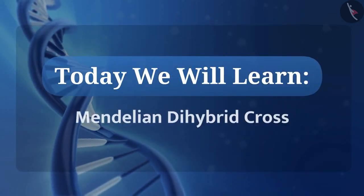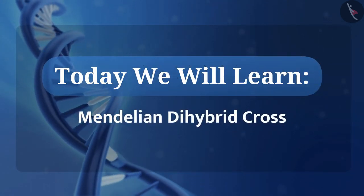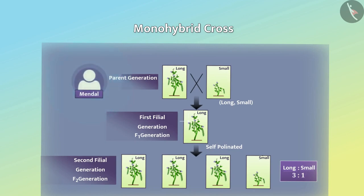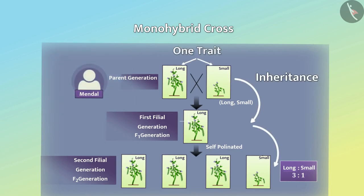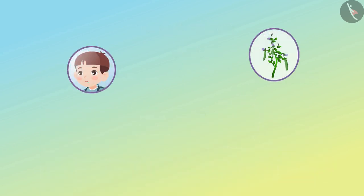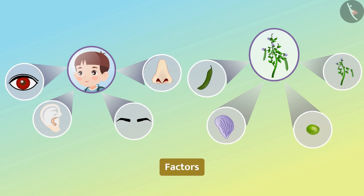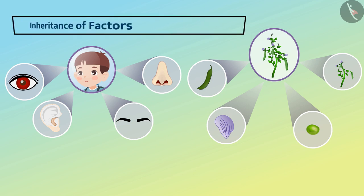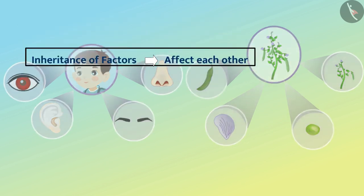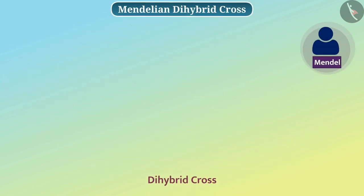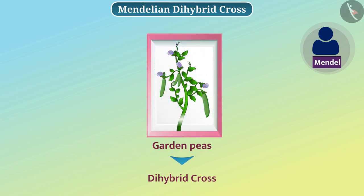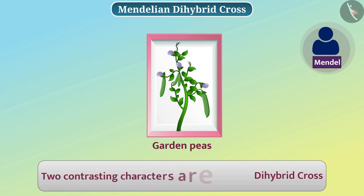Today we will learn about Mendelian dihybrid cross. In monohybrid cross, Mendel studied the inheritance of only one trait at a time. But in an organism, many different characters are present, and the factors that control them are also different. So the inheritance of these factors will affect each other. To understand this, Mendel performed a dihybrid cross of a garden pea plant. A cross in which two contrasting characters are studied is called dihybrid cross.